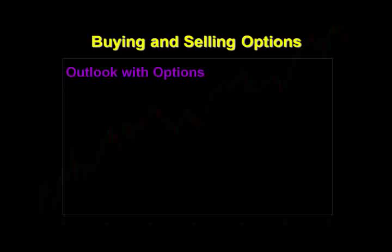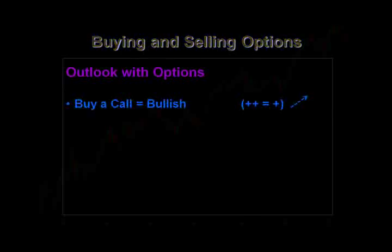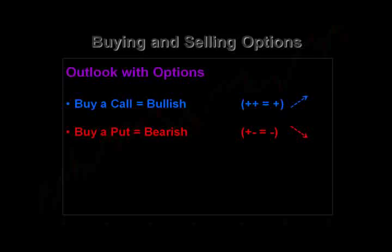Let's look at the outlook we have when we buy options. When we buy a call, we're bullish — we want the stock price to go up. Think in math terms of plus plus equals plus. When we buy a put, we are bearish — it's the complete opposite. If you think of buying as plus and selling as minus, and a call as plus and a put as minus, then when we buy a put: the buy is a plus, the put is a minus, and plus minus equals minus. That's what we learned at school.